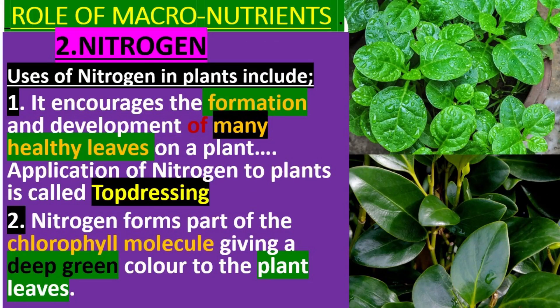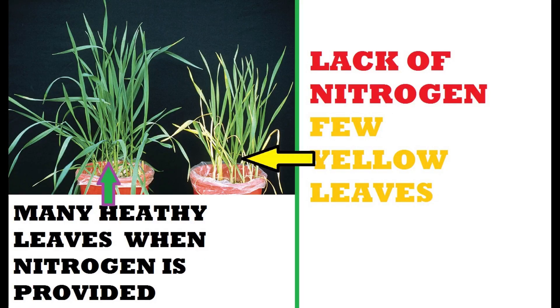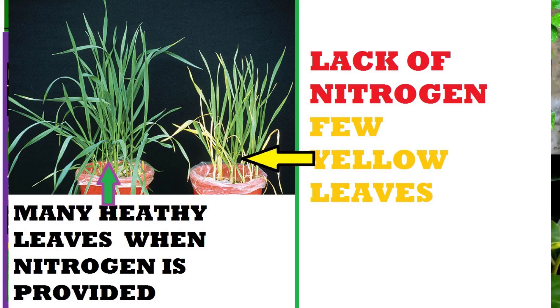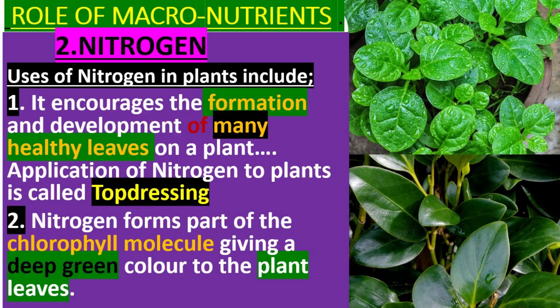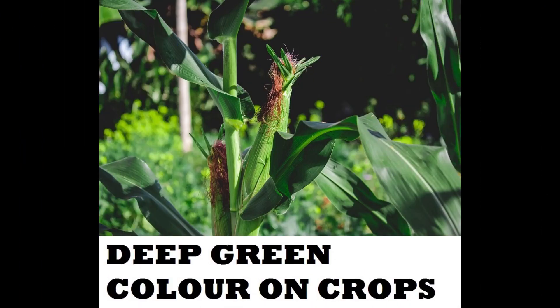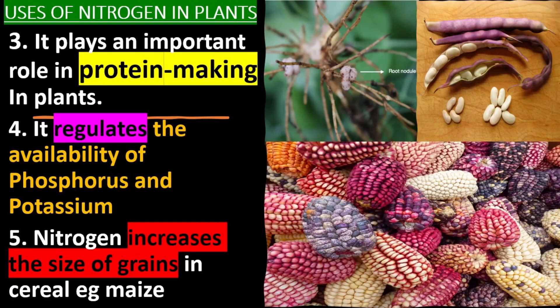Role of macronutrients: Nitrogen. Uses of nitrogen in plants include: it encourages the formation and development of many healthy leaves on a plant. Nitrogen forms part of the chlorophyll molecule, giving a deep green color to the plant leaves. It plays an important role in protein making in plants.